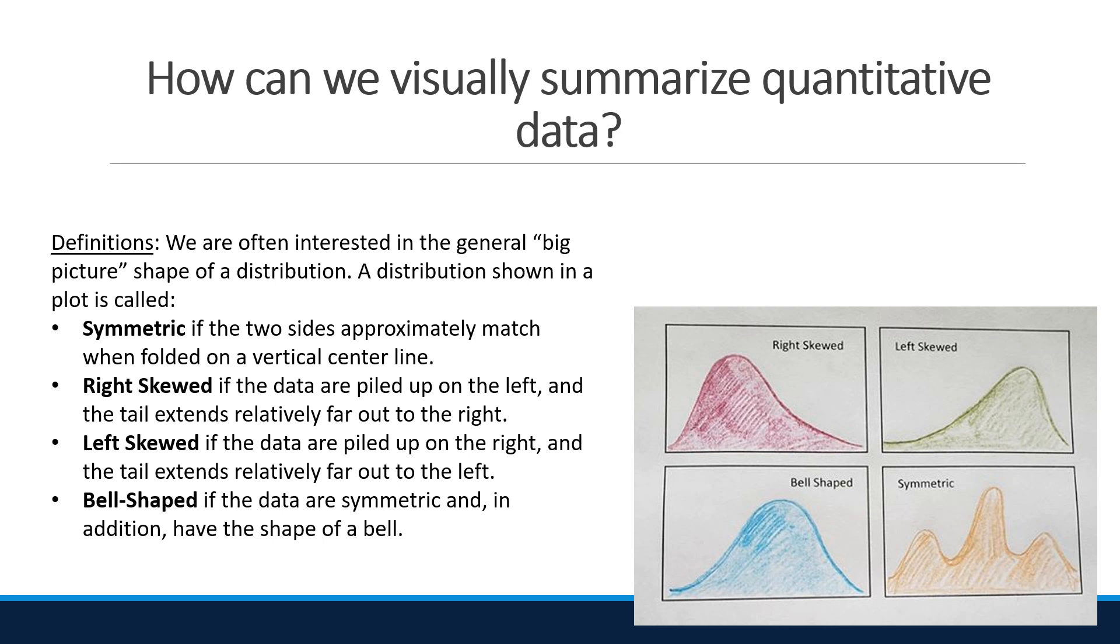Right skewed if the data is piled up to the left and the tail extends relatively far out to the right. Left skewed if the data are piled up on the right and the tail extends relatively far out to the left.